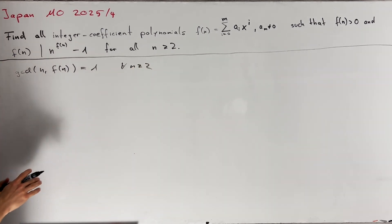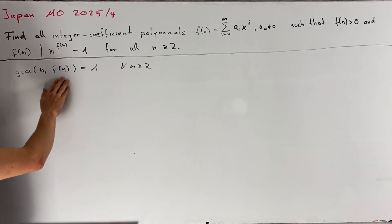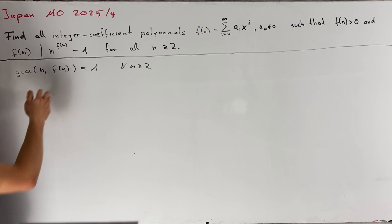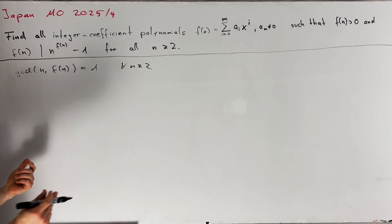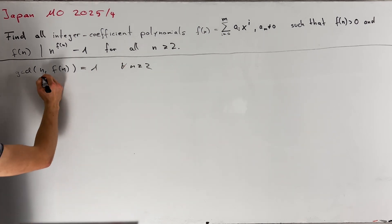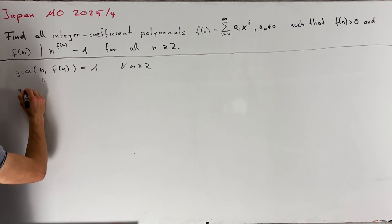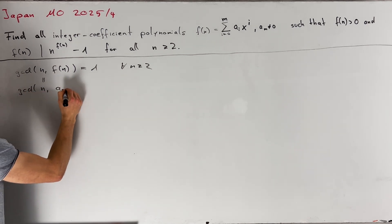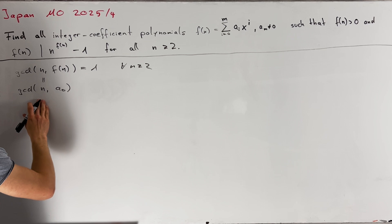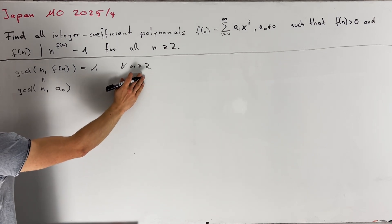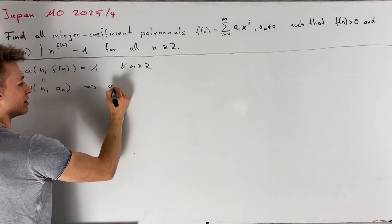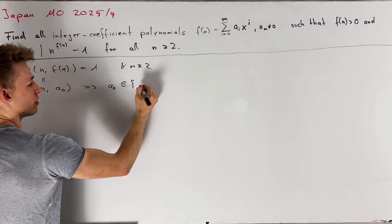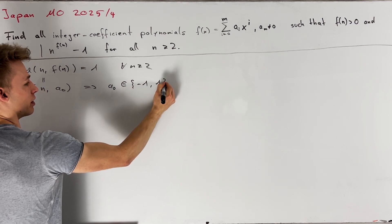On the other hand, we know that the residue class of f(n) modulo n is just equal to our constant term a₀ in the polynomial. So the gcd of n and f(n) can be written as the gcd of n and a₀. Since this holds for all n greater than or equal to 2, we can conclude that a₀ equals 1 or minus 1.